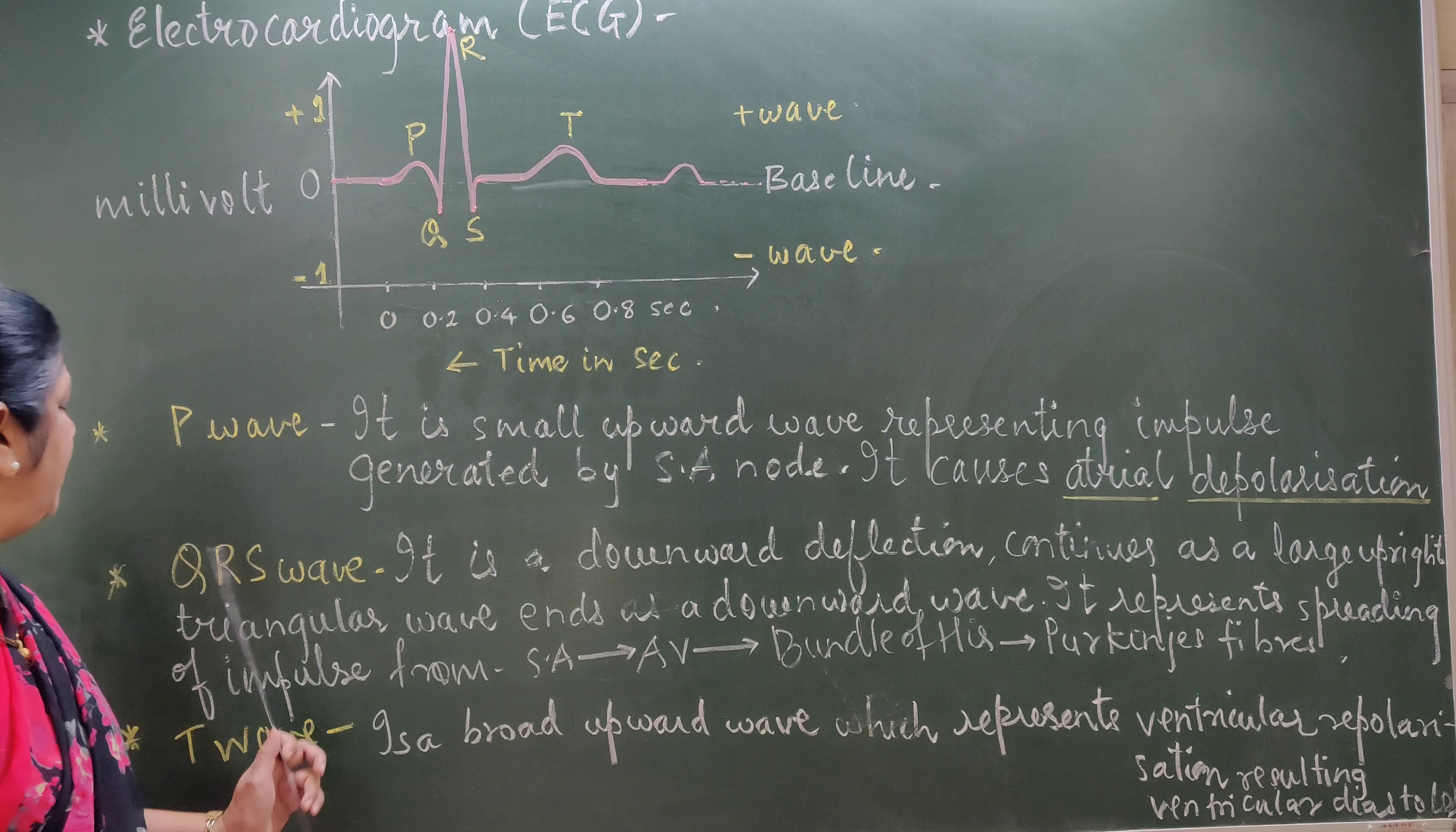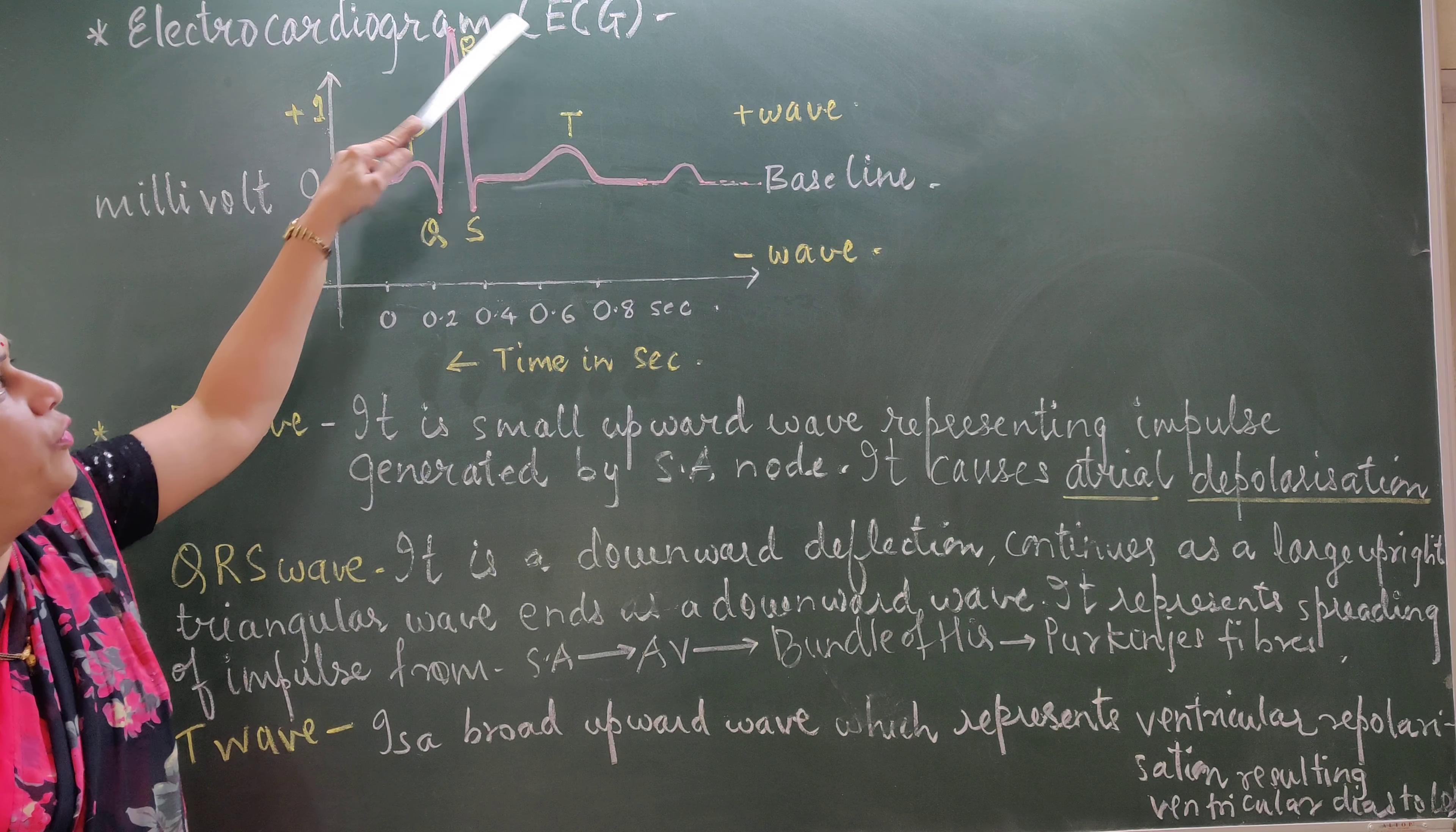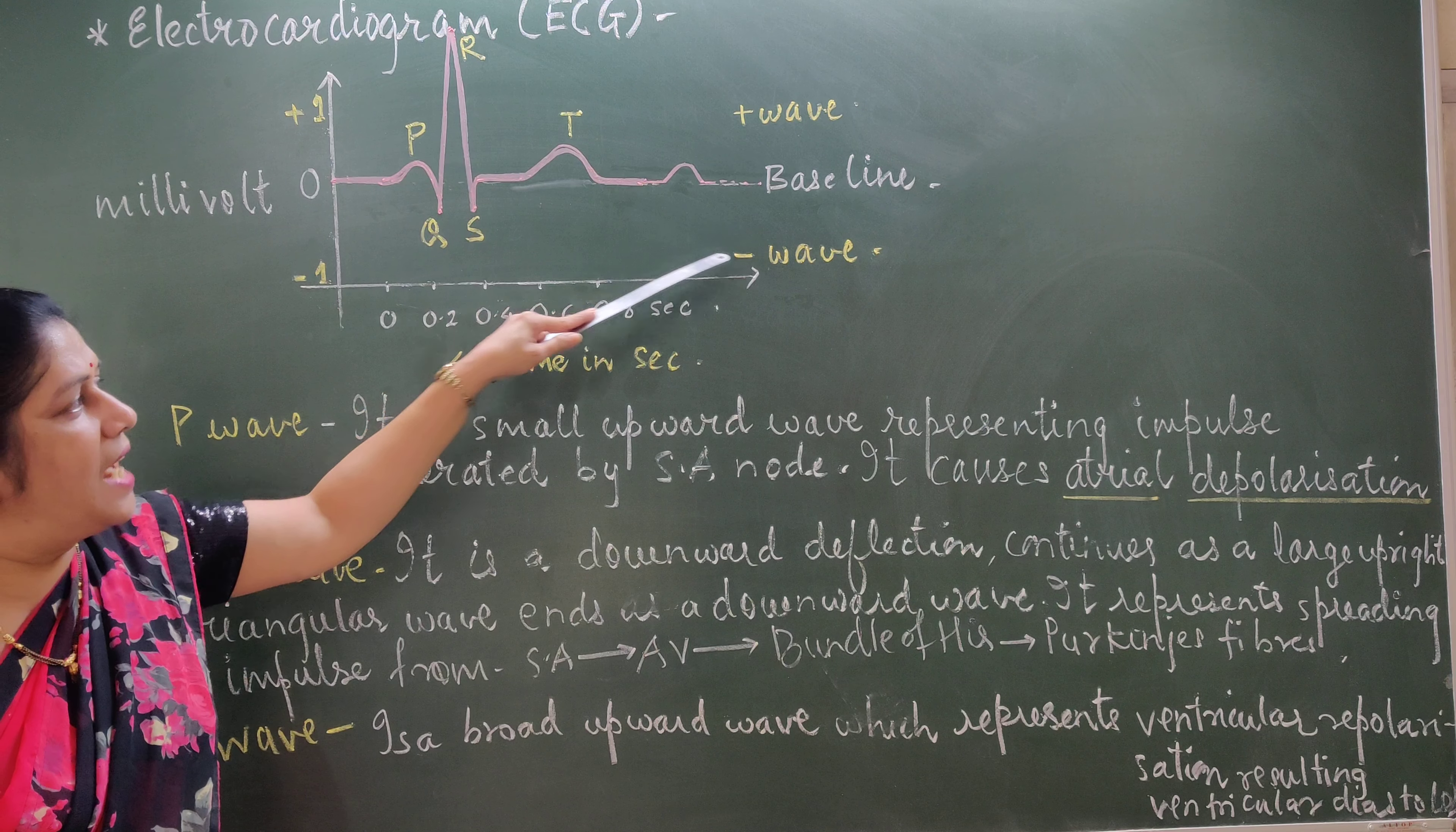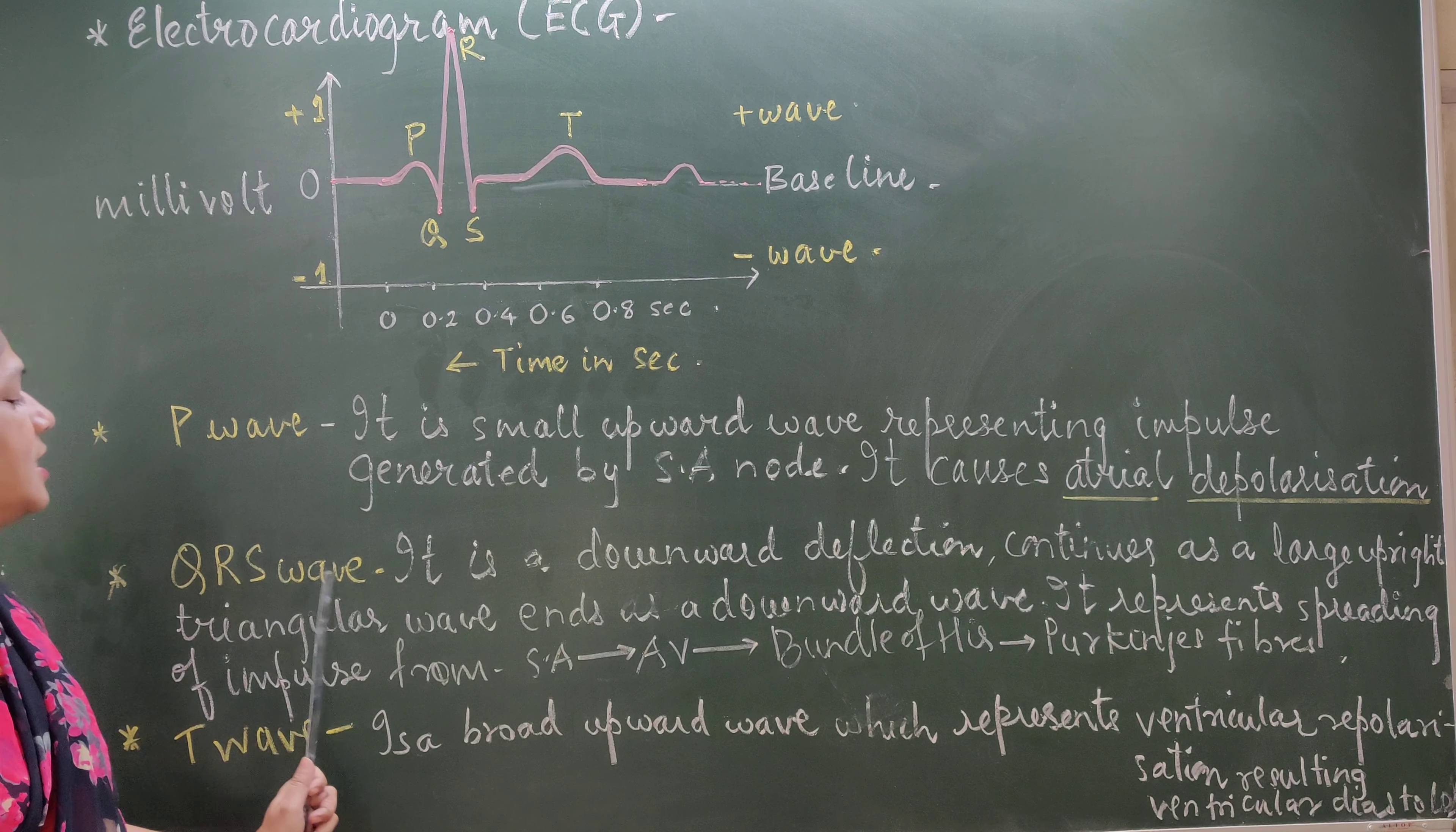Whereas, the second wave is the QRS wave, a sharp triangle. This sharp triangle represents, in this triangle, R is the point which is on the upper side, which shows a positive wave. Whereas, towards the lower side are the points Q and S. They are at the negatives. So, it is called negative wave. Out of which, P, R and T are positive and Q, S is a negative wave. Now, what is QRS wave?